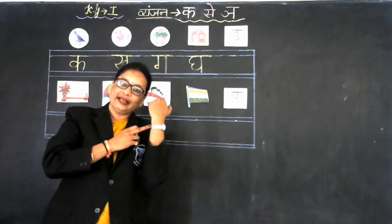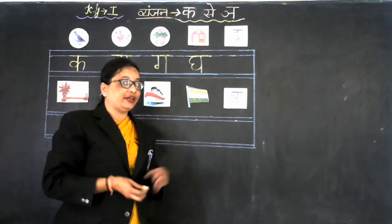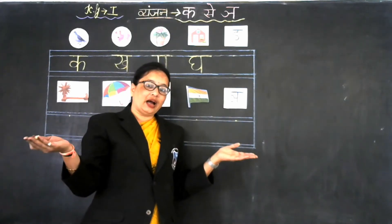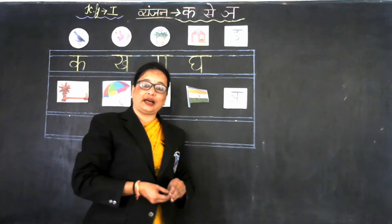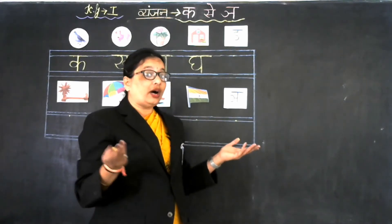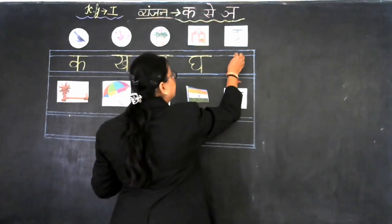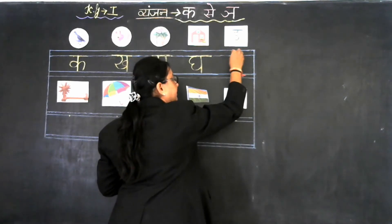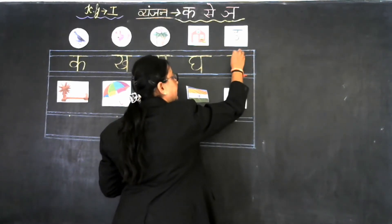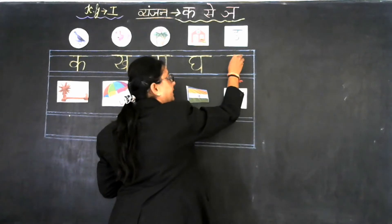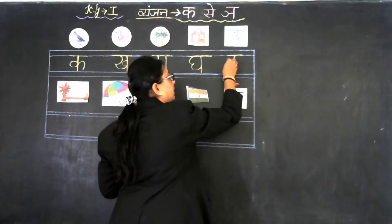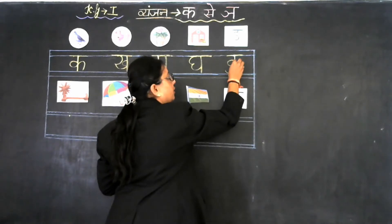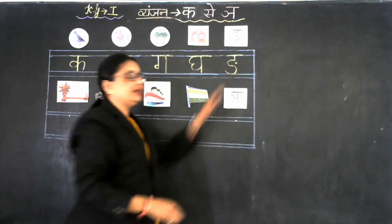Now our next measure is Anusvara. Anusvara se khaali — anusvara se koi shabd nahi banta. But what is the formation of Anusvara? Look at the board. Sleeping line, then small standing line, then right curve like this, then left curve like this, and small dot like this.